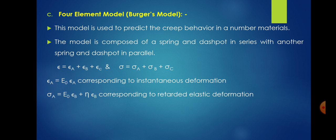The next rheological model is the four-element model, also called the Burgers model. This model is used to predict the creep behavior of a number of materials. The model is composed of a spring and dashpot connected in series with another spring and dashpot connected in parallel. The total strain is: epsilon = epsilon_a + epsilon_b + epsilon_c.